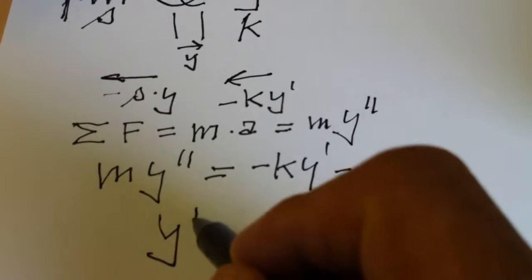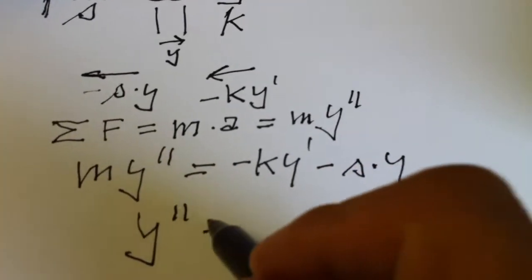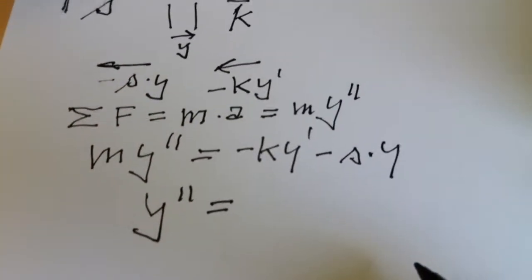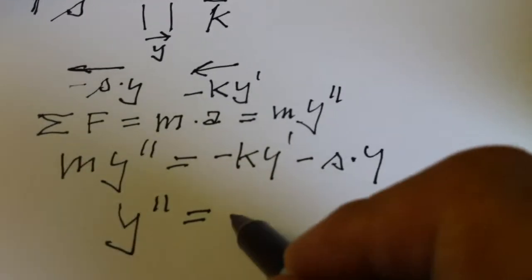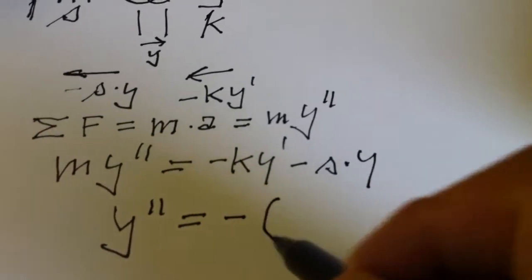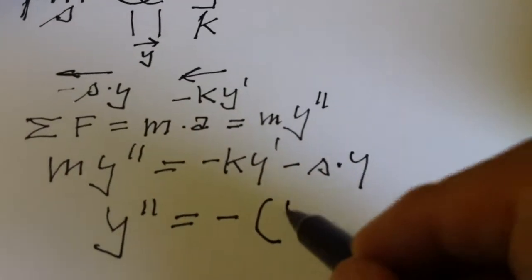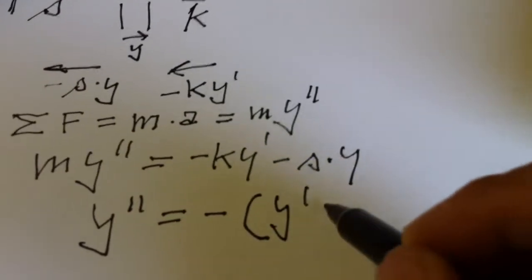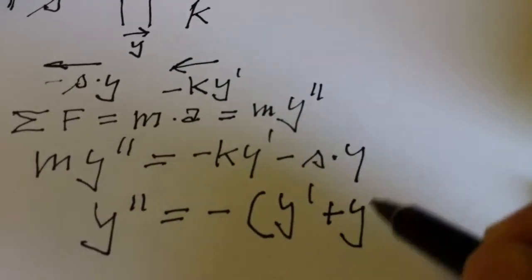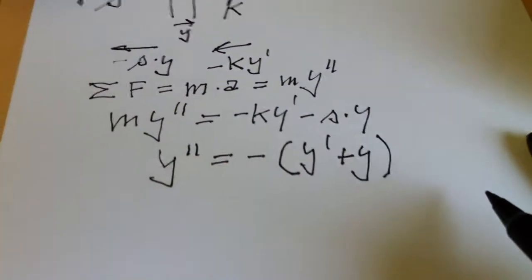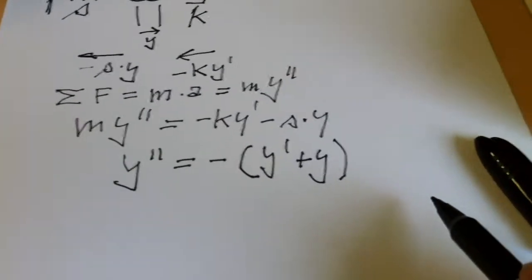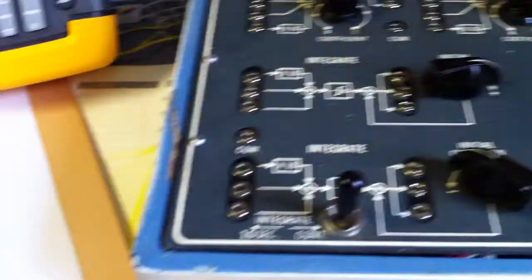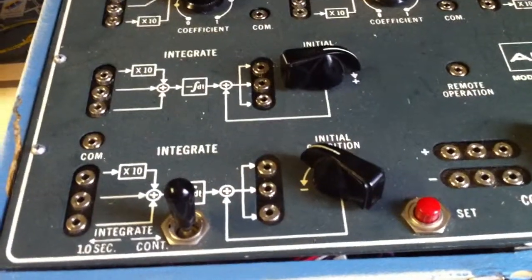And our equation simply writes as Y second equals minus parenthesis Y prime plus Y. So, this is an equation that has to be solved using this analog computer.